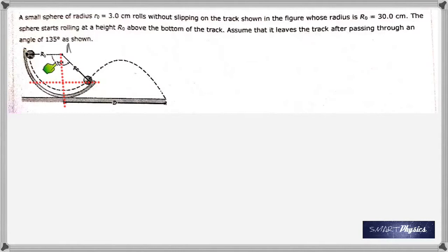This angle is given as 135 degrees. The first thing we do is set up right triangles by dropping a vertical line from there and a horizontal here. We're going to take this as the reference height or the ground.